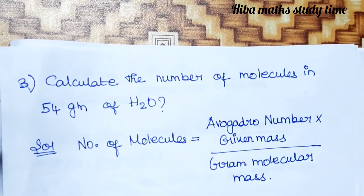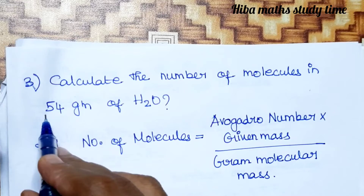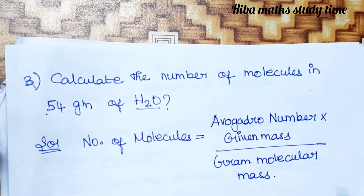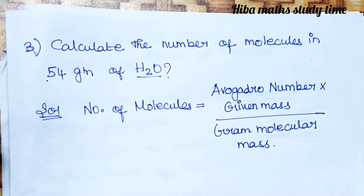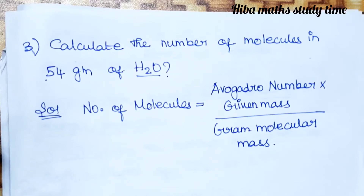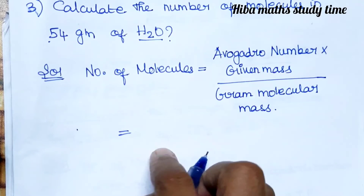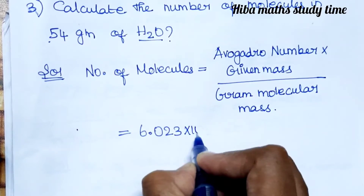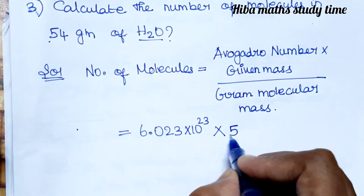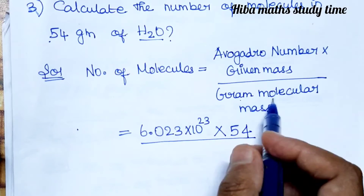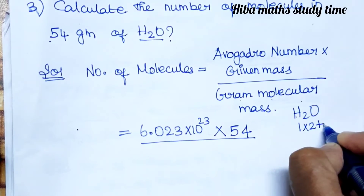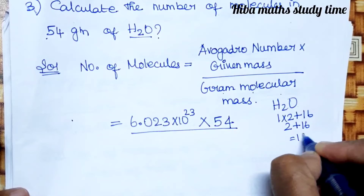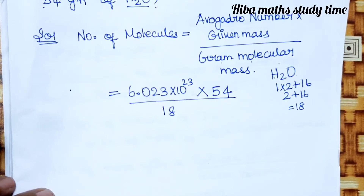Third question: calculate the number of molecules in 54 grams of H2O. Water's gram molecular mass: hydrogen is 1 into 2 equals 2, plus oxygen 16, giving 18. The formula is: number of molecules equals 6.023 into 10 power 23 into given mass (54 grams) divided by gram molecular mass (18).